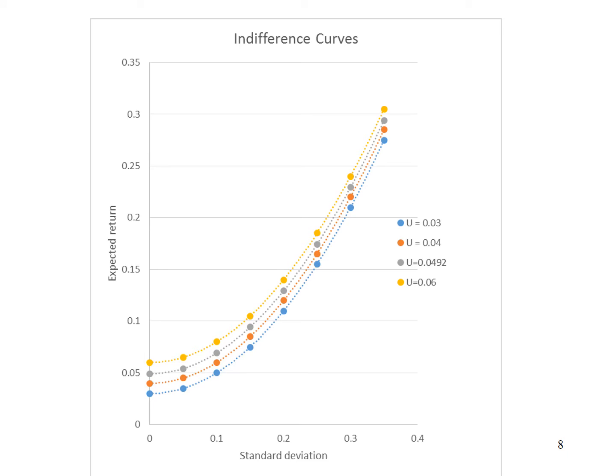Using the expected return calculated in the previous table, I draw 4 indifference curves, as shown in this graph. From the graph, take note that the higher the indifference curve, the higher the utility.